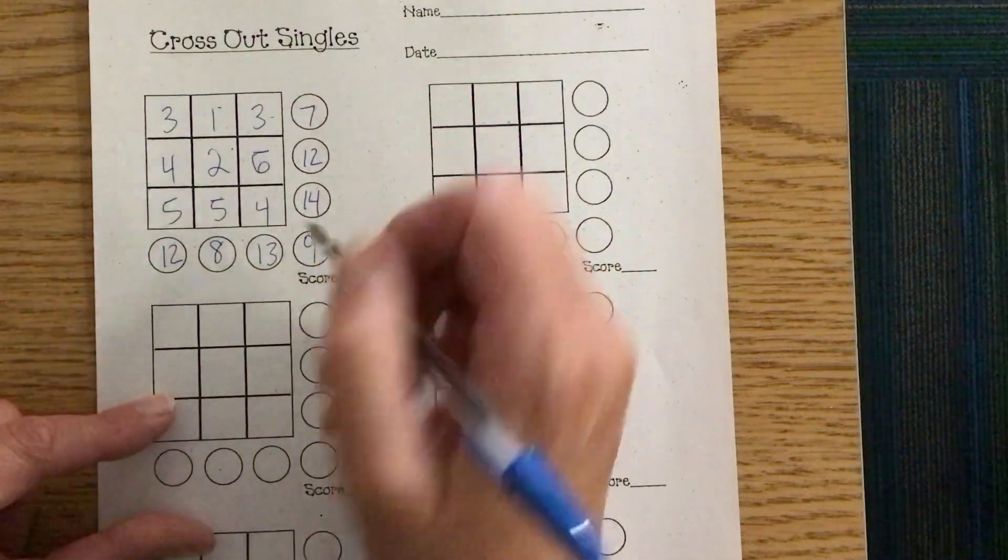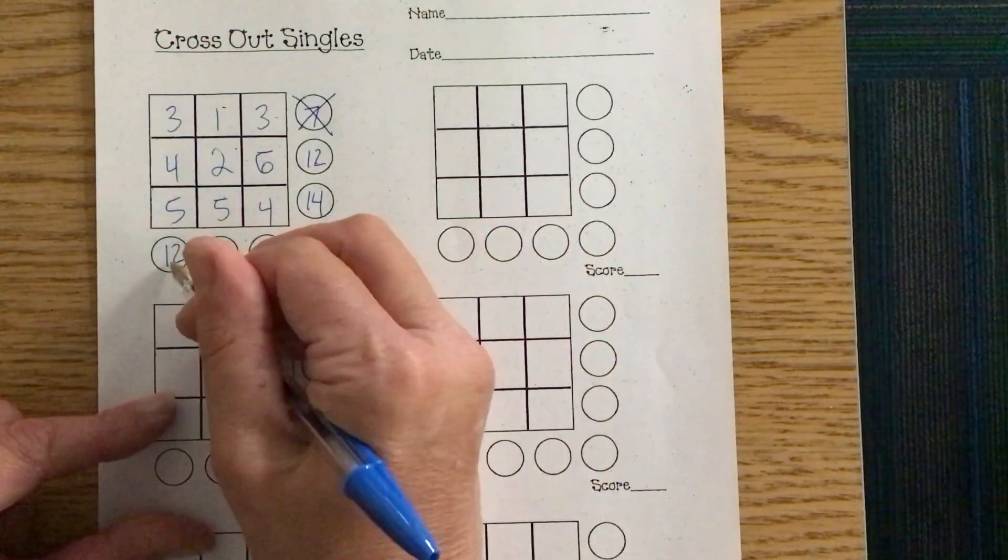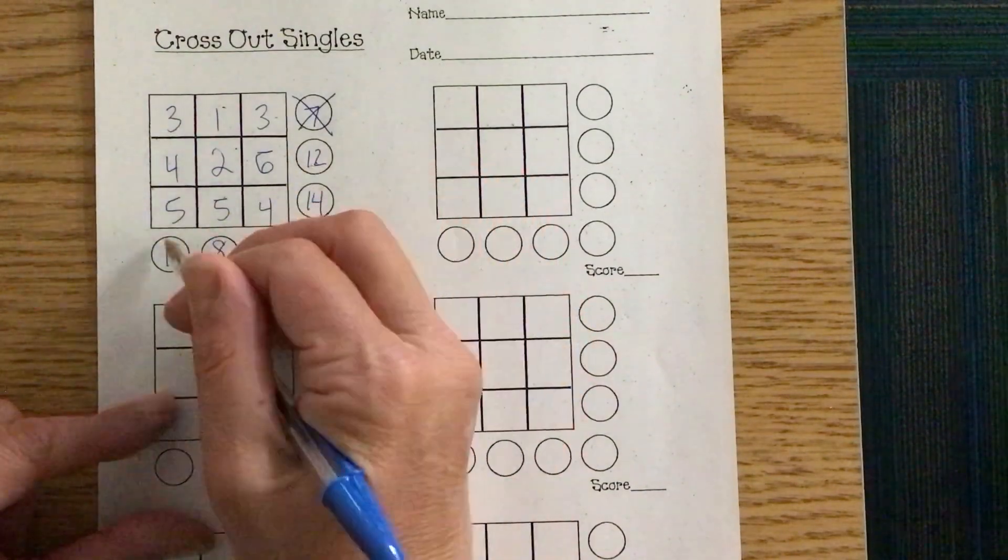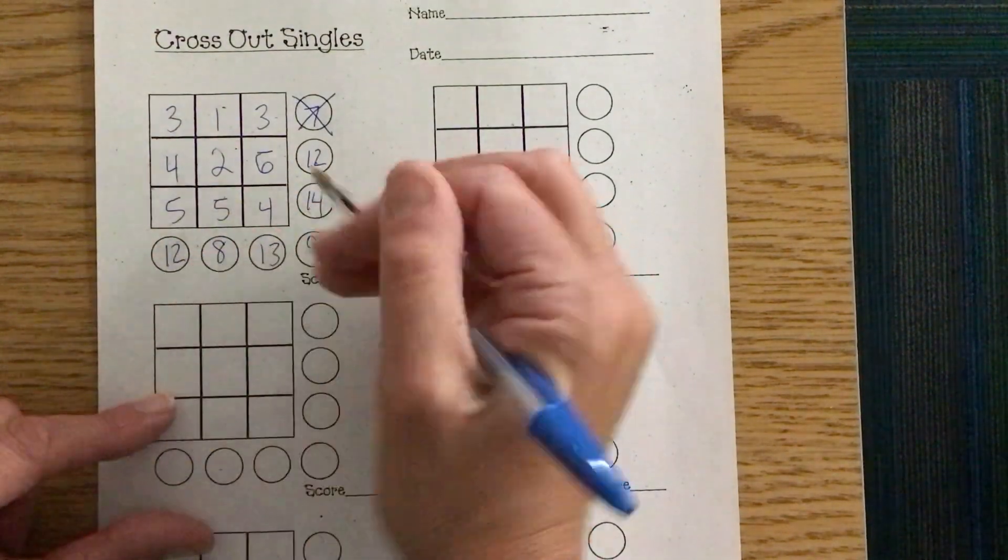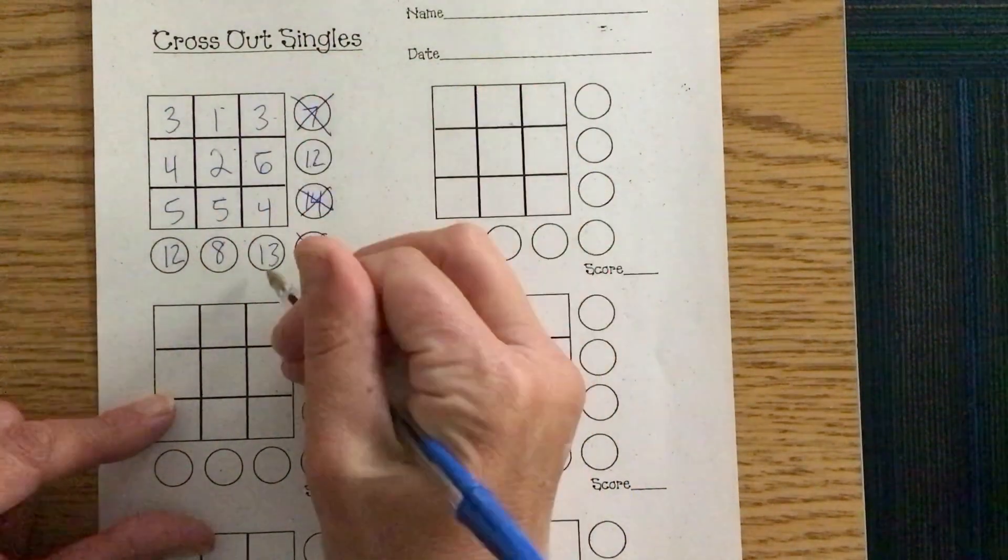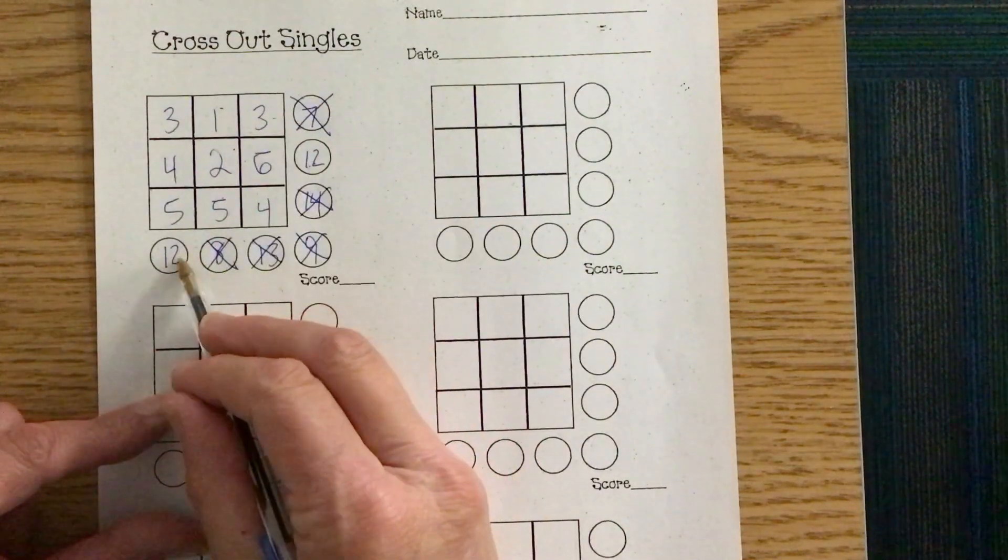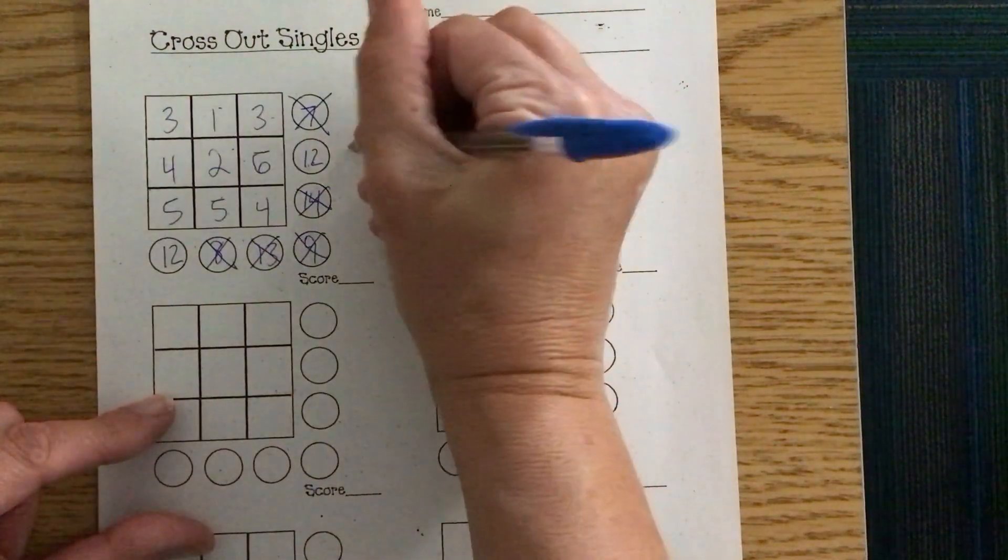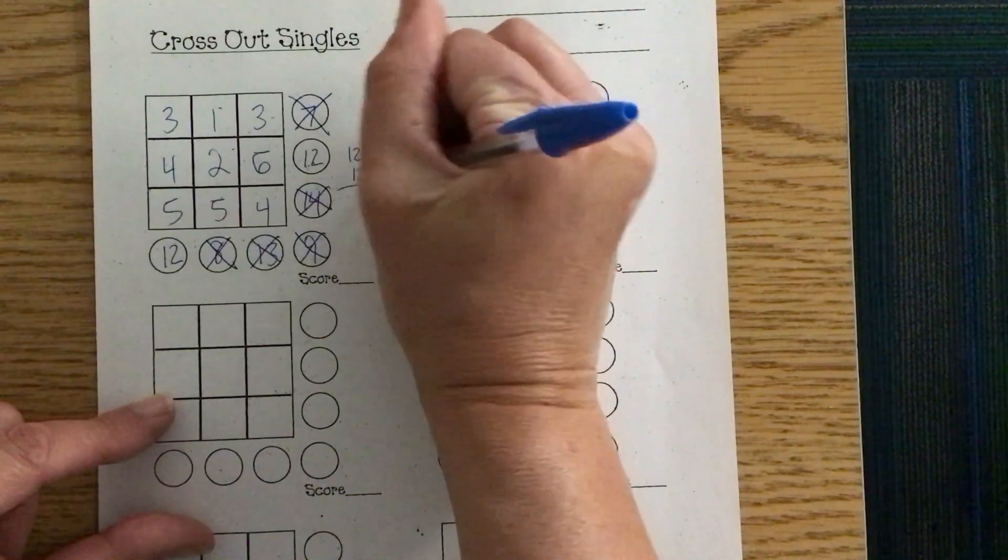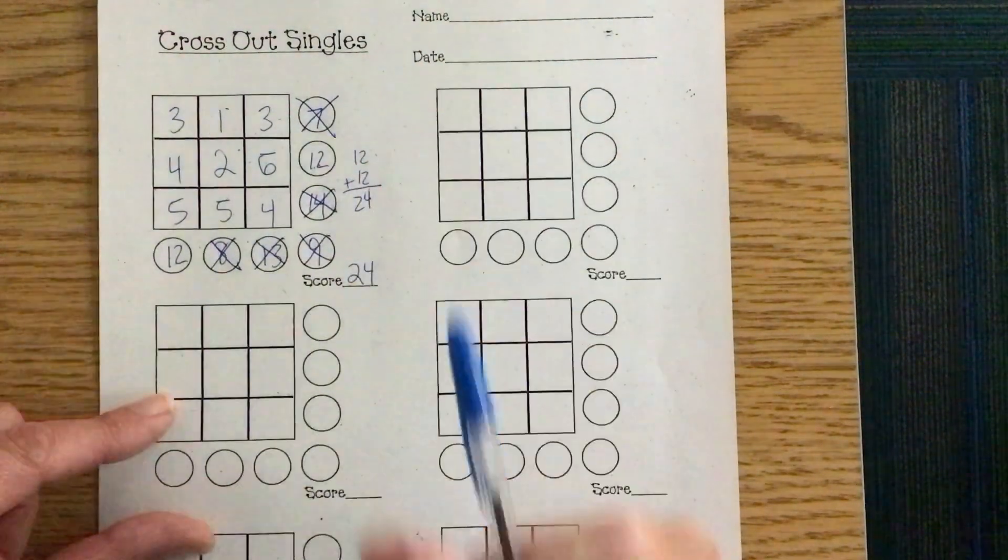So the seven only happens once, cross it off. This 12, I've got it twice, I get to keep those 12 points and these 12 points. The 14, uh-oh, so nine's only once, 13, and eight is only once. So I keep 12 points here and 12 points here. I need to add those together, and my score is 24.